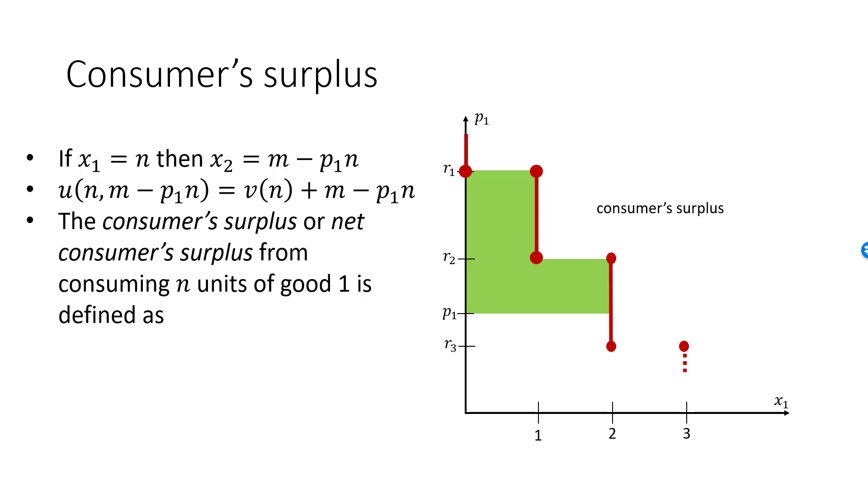Consumer surplus is often abbreviated CS. The consumer surplus of consuming n units of good 1 is v of n minus p1n. Since v of n is the sum of all reservation prices, consumer surplus can also be written like this. In any case, the gross benefit, the sum of the reservation prices, is the area under the demand curve all the way down to the horizontal x1 axis. p1 times n is the rectangle with height p1 and base n. Removing this from the gross benefit, we are left with the area in between the demand curve and the p1 horizontal line.